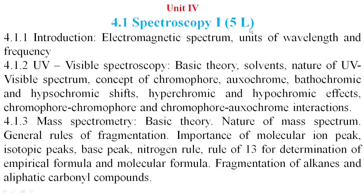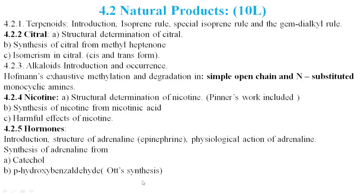Unit 4. 4.1: Spectroscopy I — 5 lectures. 4.1.1: Introduction — electromagnetic spectrum, units of wavelength and frequency. 4.1.2: UV-Visible Spectroscopy — basic theory, solvents, nature of UV-visible spectrum, concept of chromophore, auxochrome, bathochromic and hypsochromic shifts, hyperchromic and hypochromic effects, chromophore-chromophore and chromophore-auxochrome interactions. 4.1.3: Mass Spectrometry — basic theory, nature of mass spectrum, general rules of fragmentation, importance of molecular ion peak, isotopic peaks, base peak, nitrogen rule, rule of 13, determination of empirical and molecular formula, fragmentation of alkenes and aliphatic carbonyl compounds.